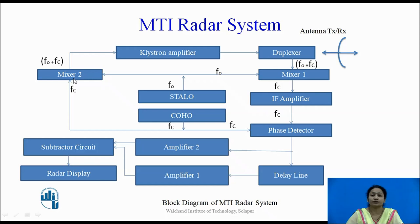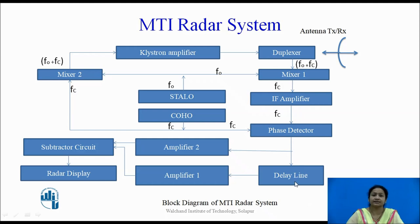Mixer 2 is used for summing the signals and Mixer 1 is used for differentiating the signals. There are two amplifiers, Amplifier 1 and Amplifier 2, which have the same characteristics. The system also consists of an IF amplifier, a phase detector circuit, a delay line, a radar display, a subtractor circuit, a klystron amplifier, a duplexer, and an antenna.